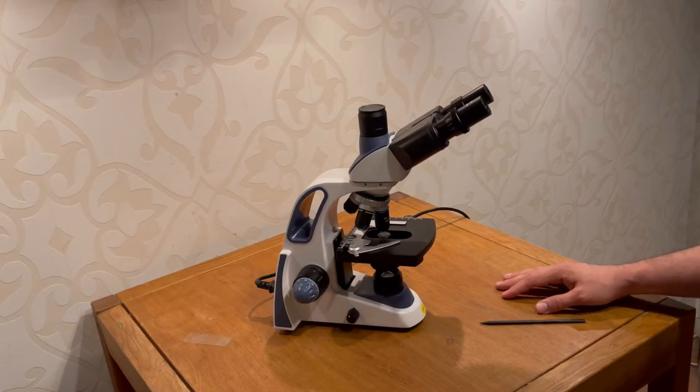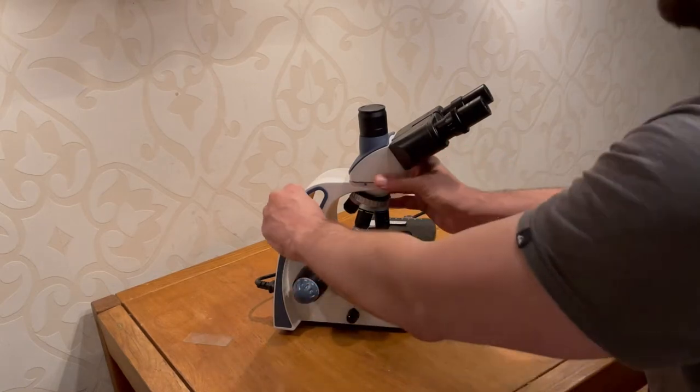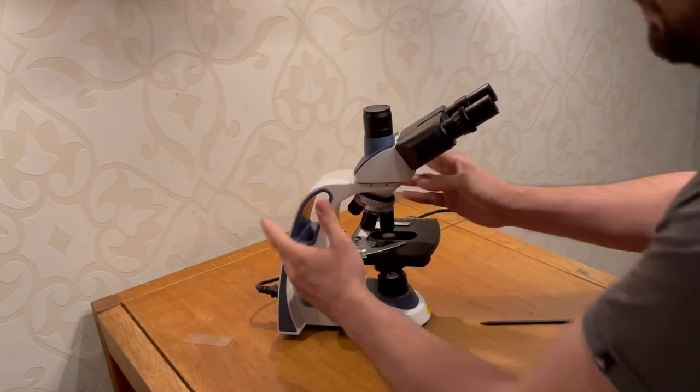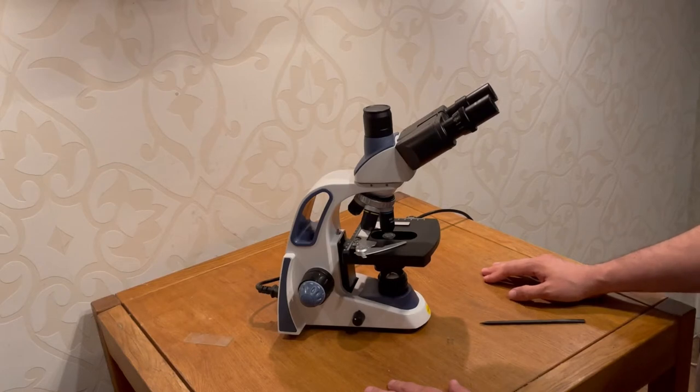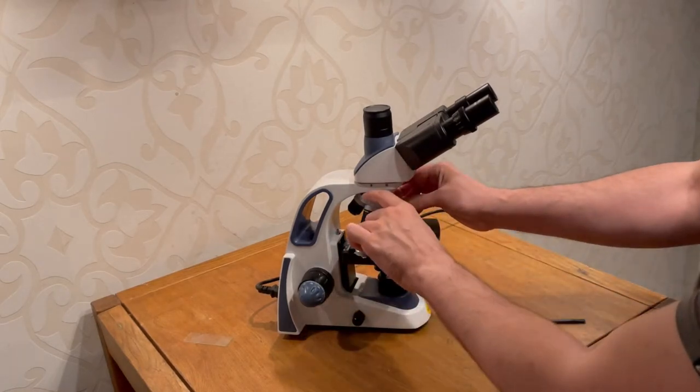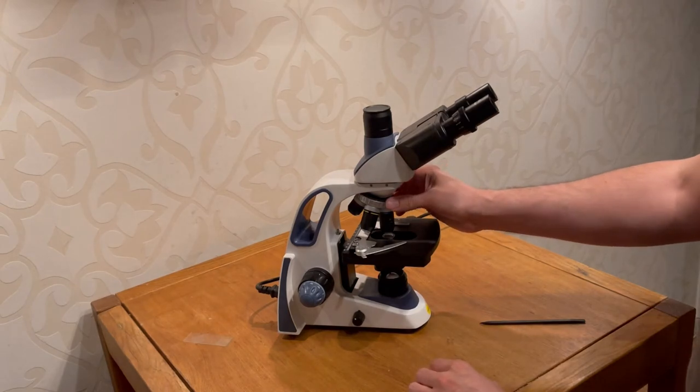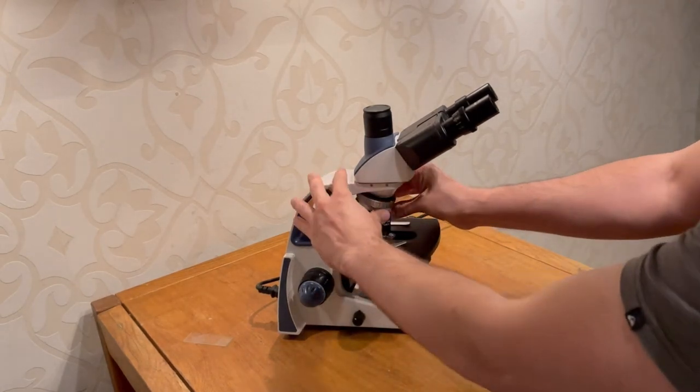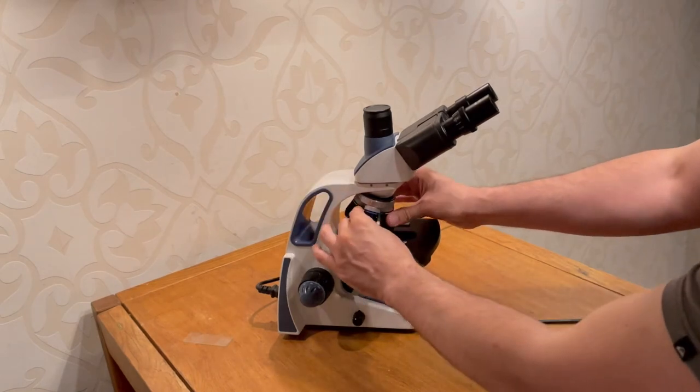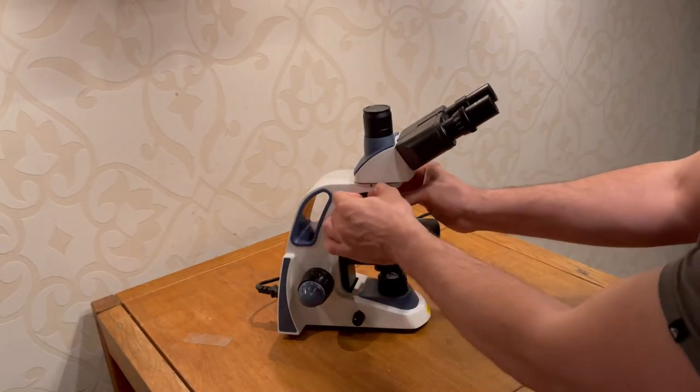The first thing you're going to notice is that it's a very nicely built microscope. It looks like good quality stuff. One of the things that I've noticed is that this thing, the objective holder, is actually, was actually spinning. So you could change the objectives, but also the whole holder would rotate.